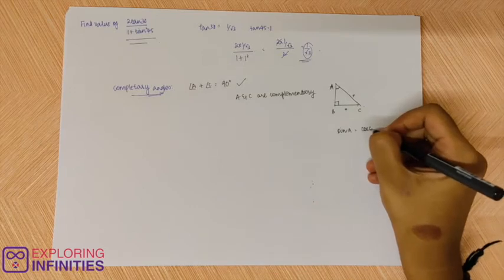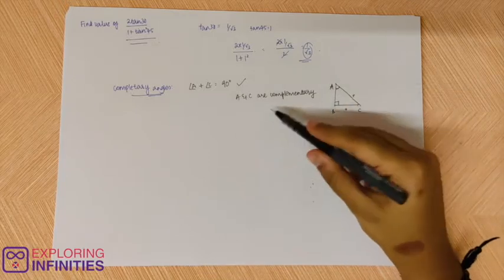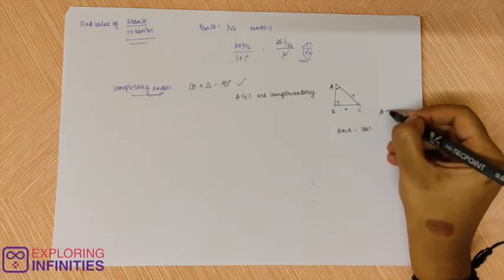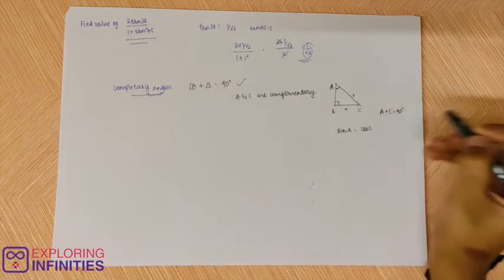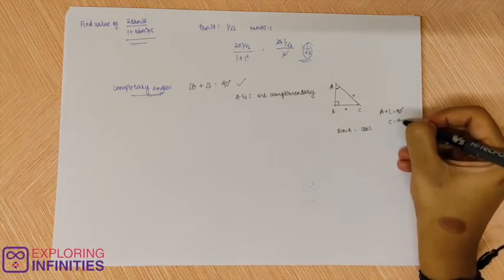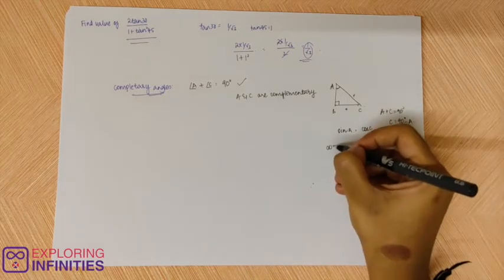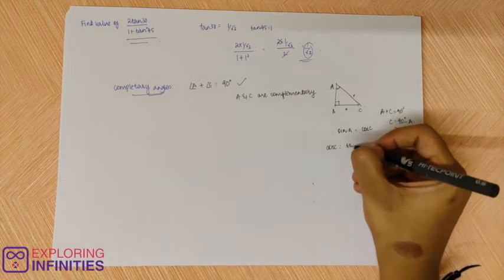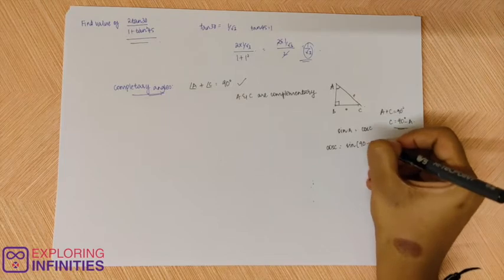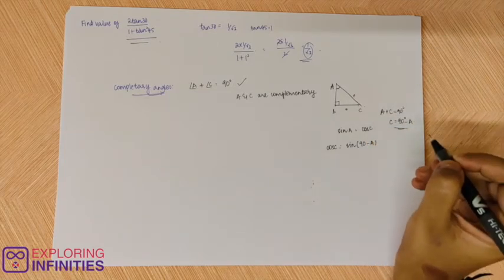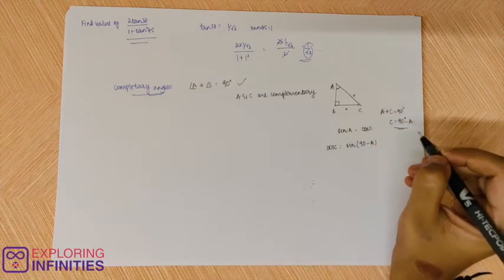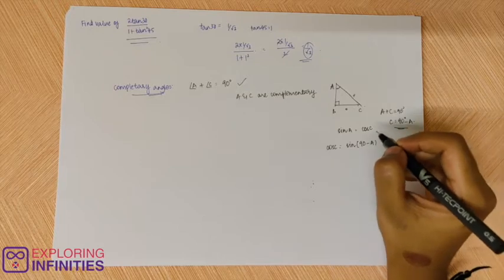So we can also write cos C as, because A and C are complementary angles, A plus C is equal to 90 degrees. So C can be written as 90 degrees minus A. So cos C can be written as sine of 90 minus A.